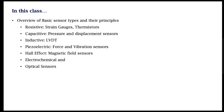These sensors come in different types. Resistive sensors include strain gauges and thermistors. Capacitive sensors are used for pressure and displacement. Inductive sensors include the LVDT — linear variable differential transformer. We also have piezoelectric sensors to detect force, Hall effect sensors that sense magnetic field, and then optical sensors and electrochemical sensors.